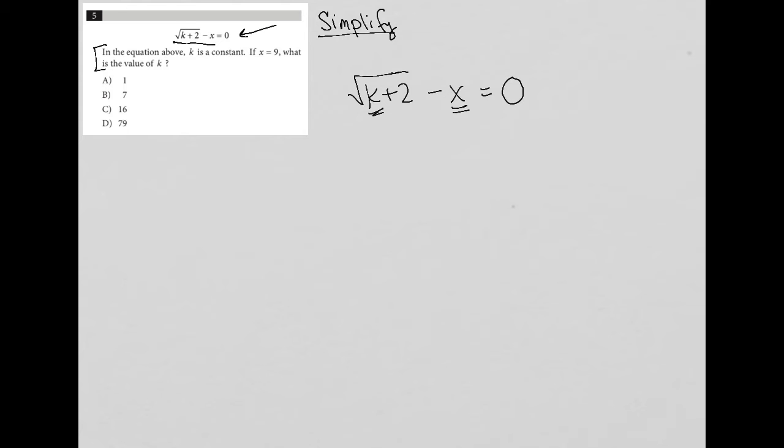But when we get down to reading the question, we see that k is a constant, but we see that x is 9, x is equal to 9. So now when I rewrite this, knowing that I need to simplify it, k plus 2 and then minus 9 equals 0.